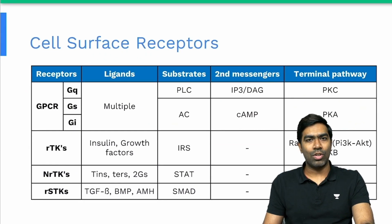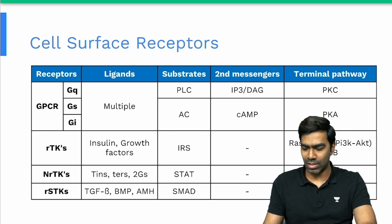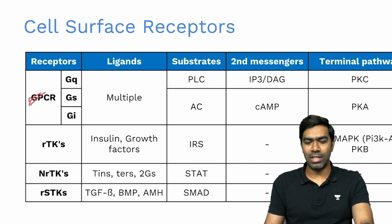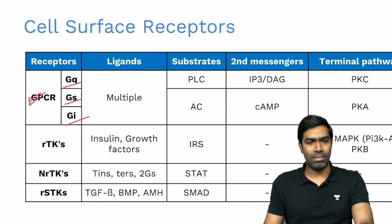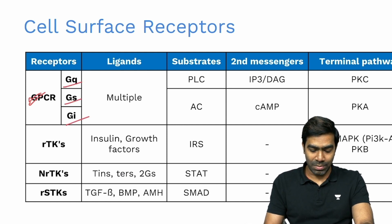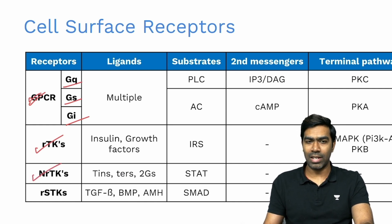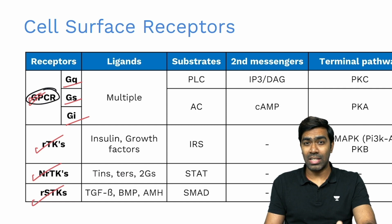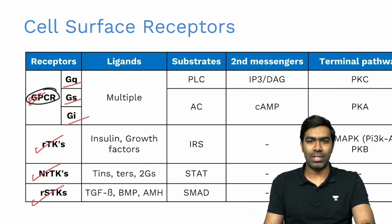Hydrophilic Group 2 hormones work via cell surface receptors. The different types are: GPCRs (G protein-coupled receptors) with three subtypes — Gq, Gs, and Gi; receptor tyrosine kinases (RTKs); non-receptor tyrosine kinases (NRTKs); and receptor serine-threonine kinases (RSTKs). Importantly, more than 70% of hormones act via the G protein-coupled receptor pathway.